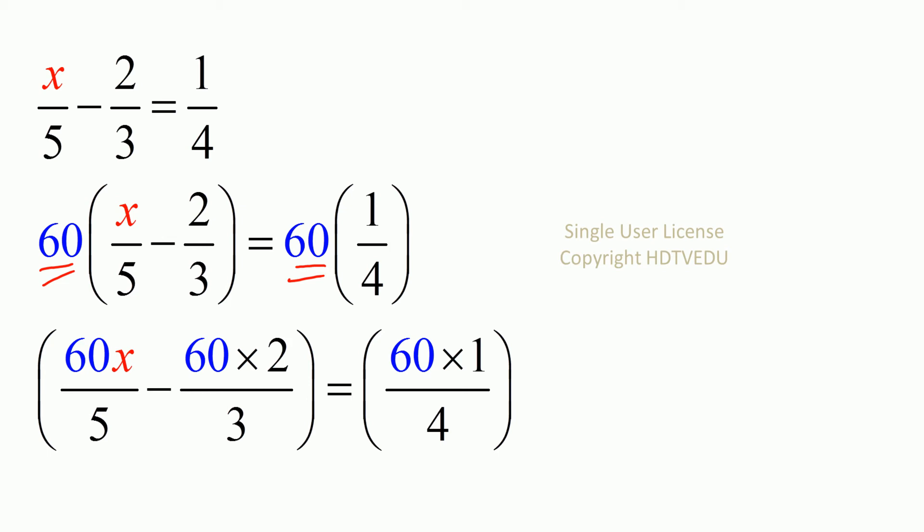60 times x over 5, and that is this. And 60 times 2 over 3, and that is this. And then on the right side, it's 60 times 1 over 4. 60 divided by 5 is 12. So you get 12x. And what is 120 divided by 3? 40. And what is 60 divided by 4? 15.